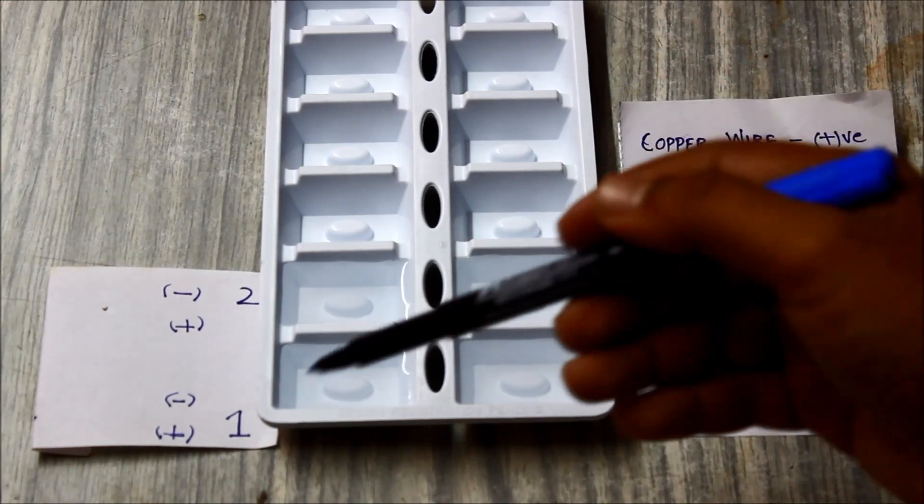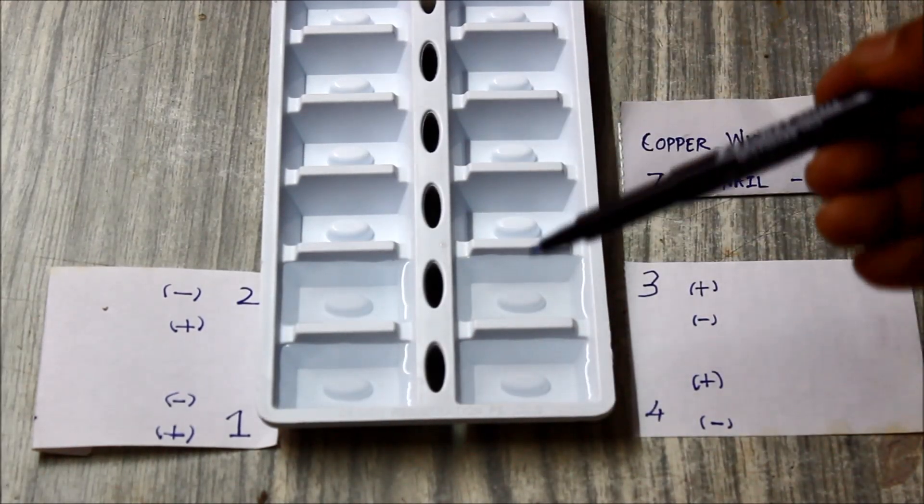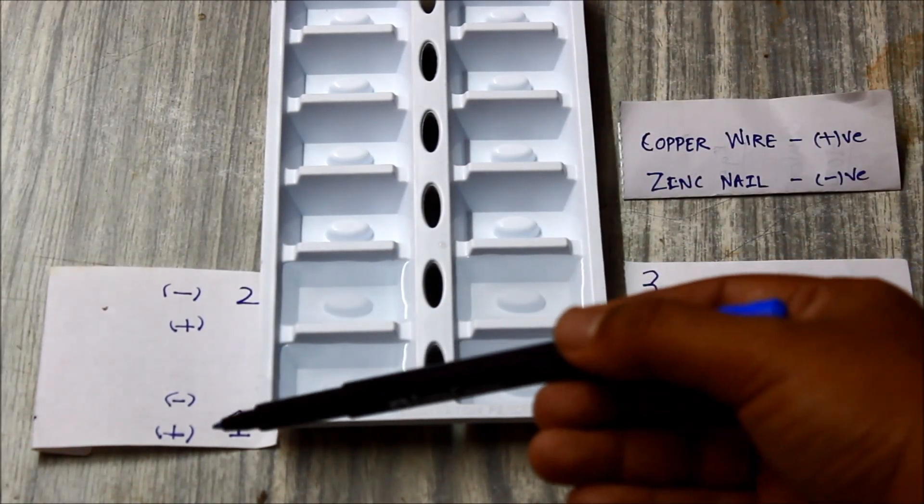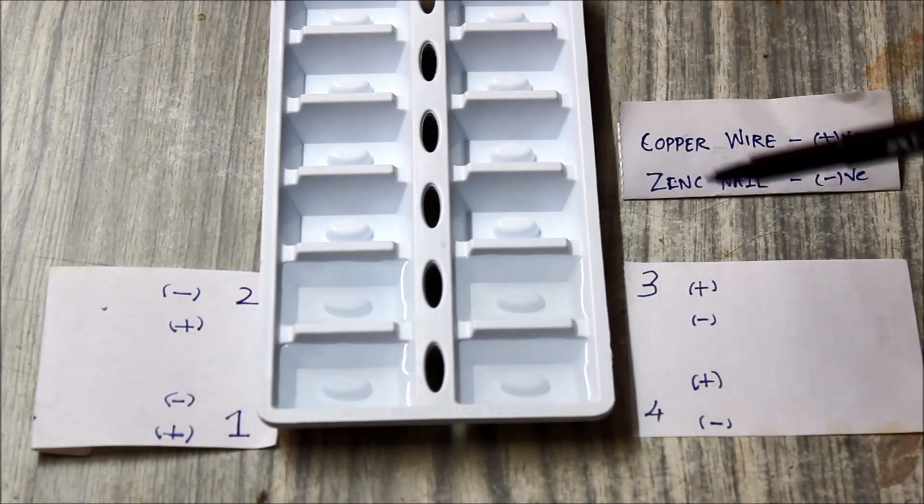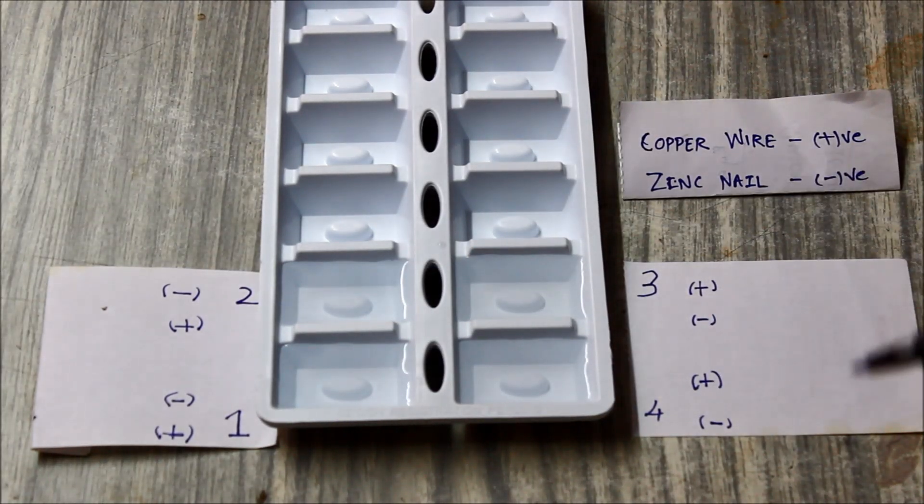We'll just mark it as cell 1, 2, 3 and 4. So these are the positive and negative terminals for our reference.